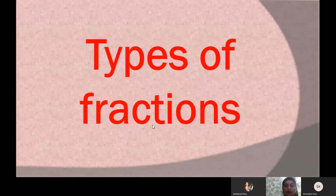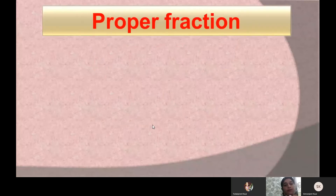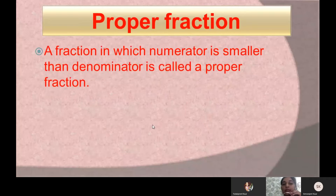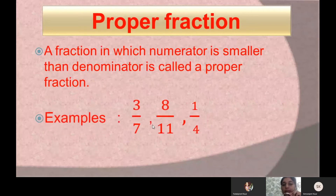Now let us learn about types of fractions. The first one is proper fraction. A proper fraction is that fraction in which the numerator is smaller than the denominator — it means the number written on the top is smaller. For example, we are having the fractions 3 by 7, 8 by 11, and 1 by 4. In each of these fractions, the number written on the top is smaller than the number written under it.